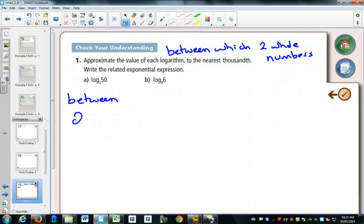2 and 3. Because 5 squared is 25, and 5 cubed is 125, and 50 is right between them.